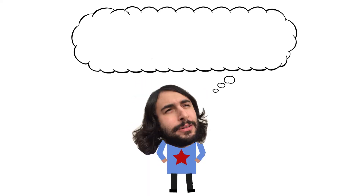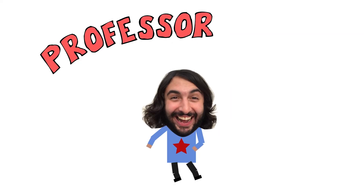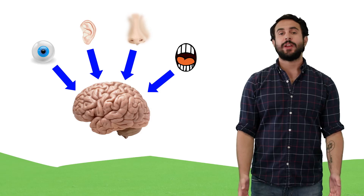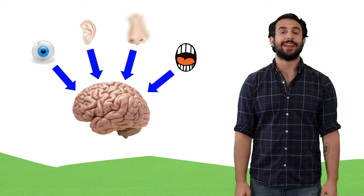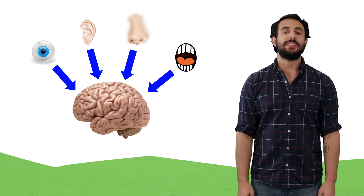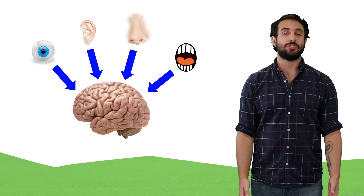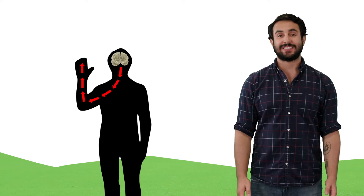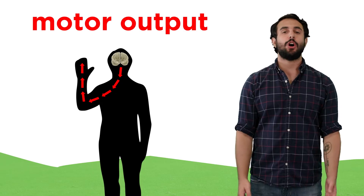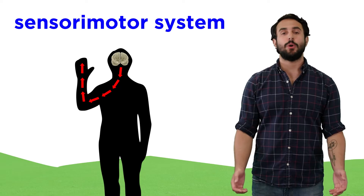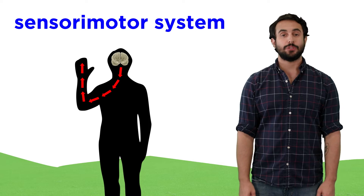It's Professor Dave, let's check your reflexes. We just went over the basics regarding how sensory information gets to your brain, so before we dig into specific aspects of brain function, let's first complete the circuit and learn a bit more about how the brain sends signals out to the body to tell it what to do. This is called motor output, and the system in control of this is called the sensory motor system. Let's get a closer look now.